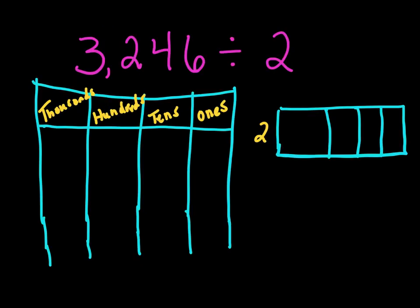Our next one: 3,246 divided by 2. So what I'm going to do is break those numbers up. We're going to say there's 3,000, there are 2 hundreds, there are 4 tens, and there are 6 ones.